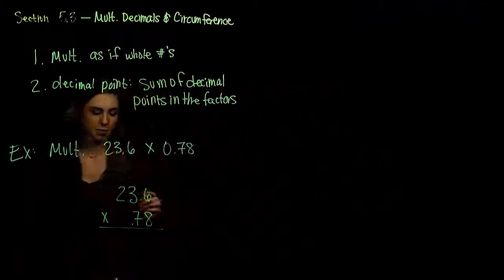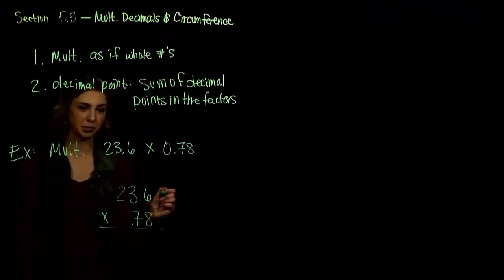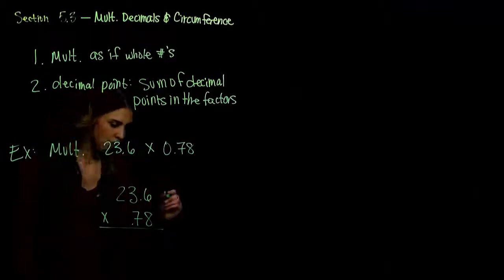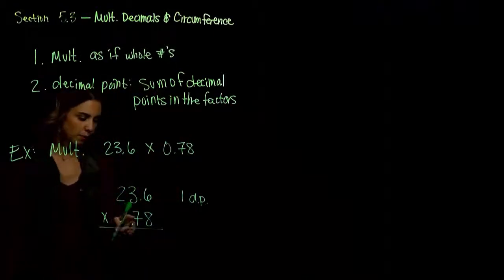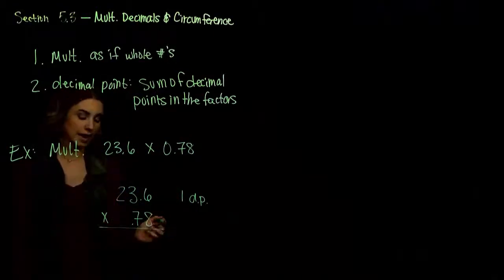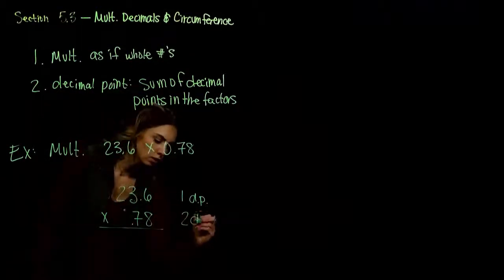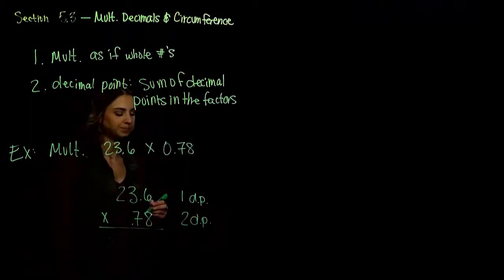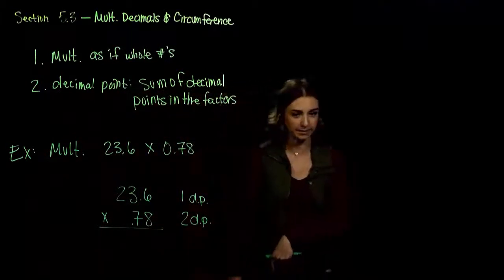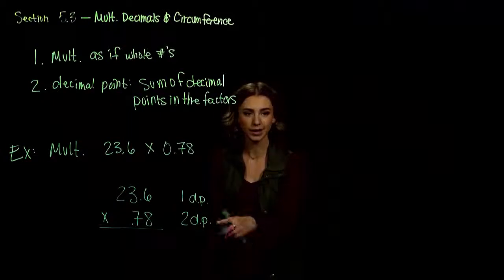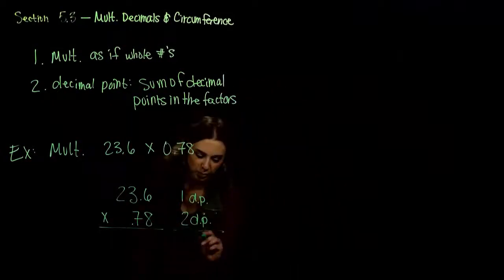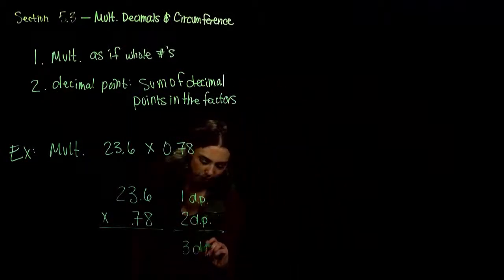In the first one, 23.6 — if we're traveling from the right into the decimal, how many do we actually have to move? Just one. So this is one decimal place. And then in 0.78, if we start all the way on the outside and travel into that decimal point, we had to travel two decimal places. So in the end, we're going to have to move in the sum of these two. I had one and two together, so we're going to have to move three decimal places in total in our final answer.